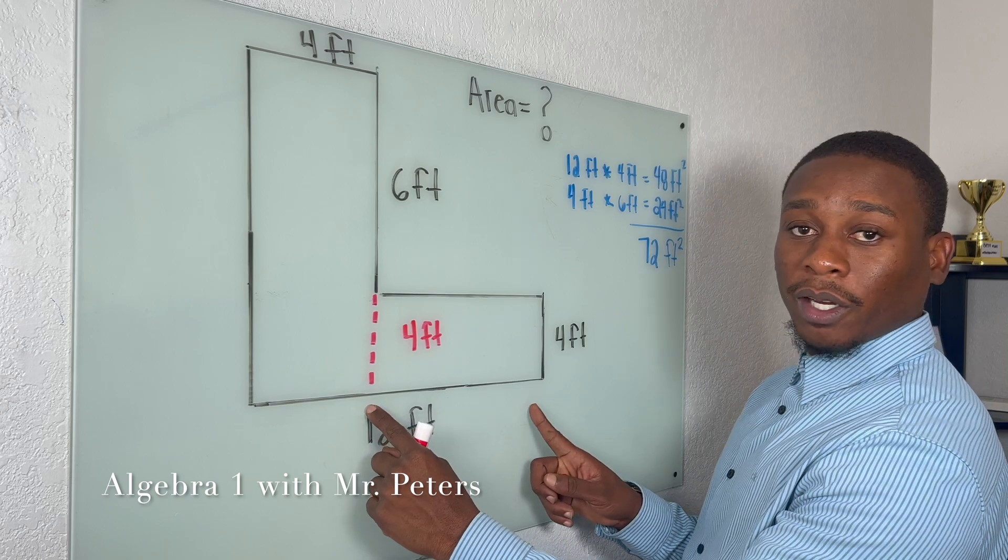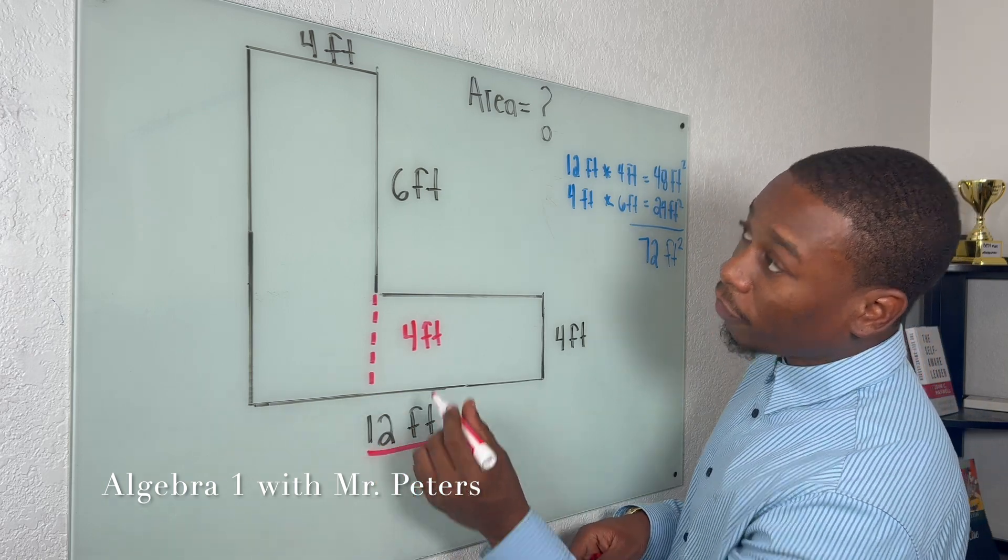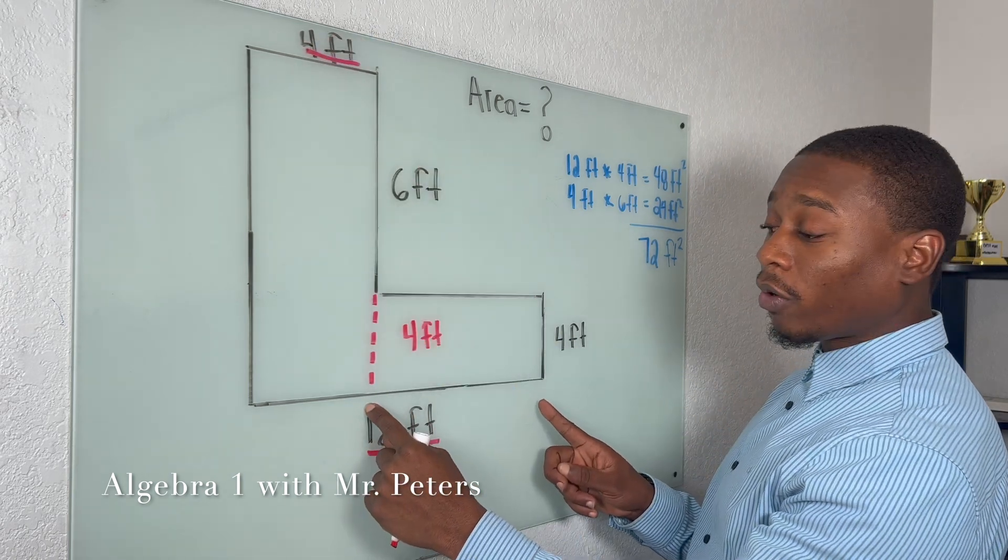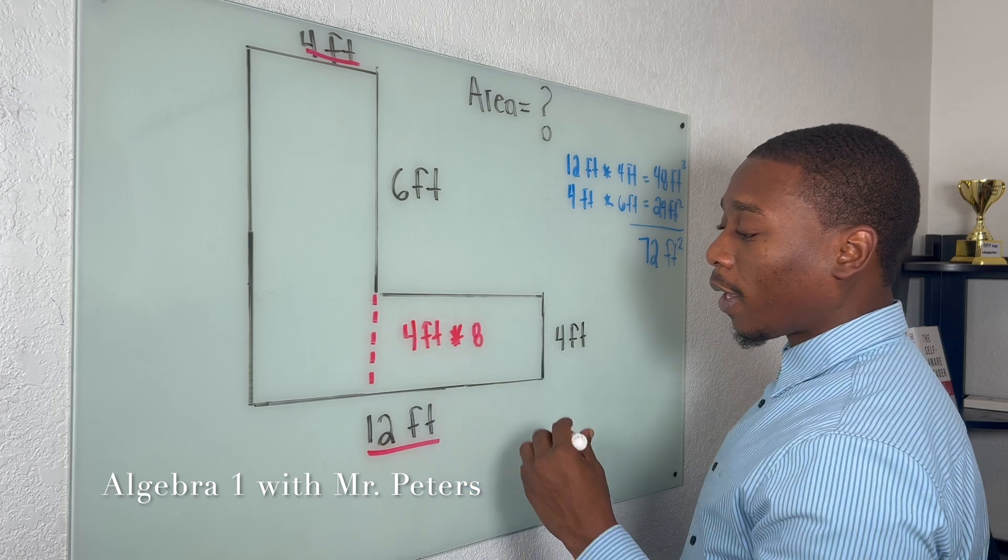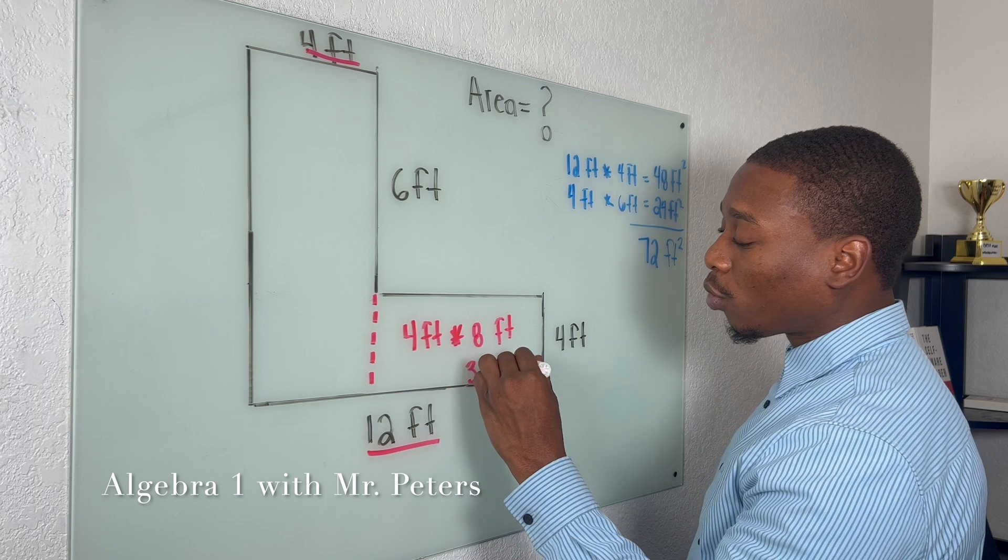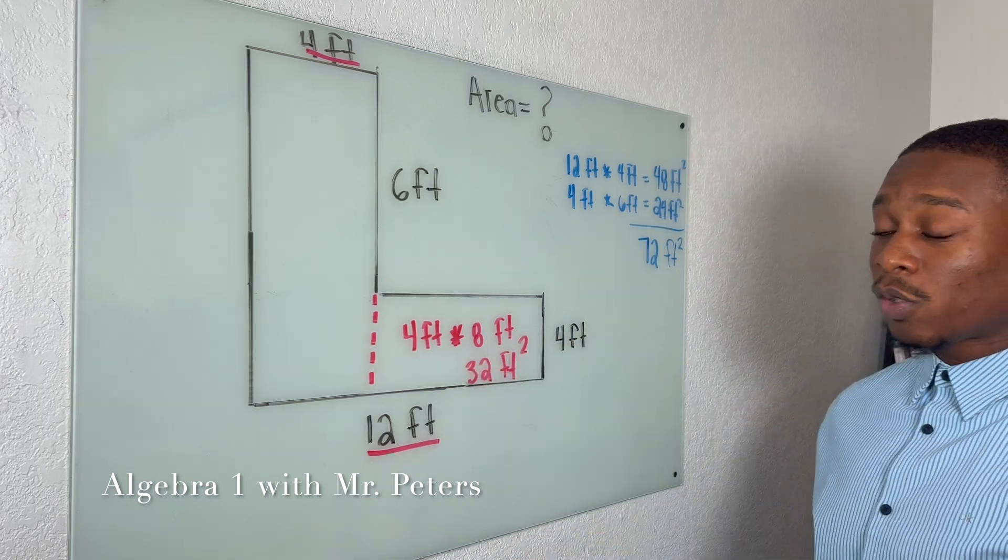How long is this piece here now? And to figure this out, we're going to do 12 feet minus four feet so we could get this small area here. Once we do, we're going to multiply four feet by eight feet and we're going to get 32 feet squared. So now this is the area for the smaller rectangle.